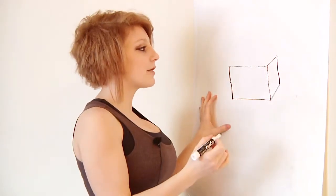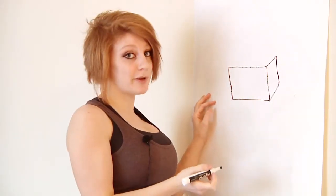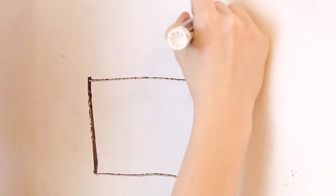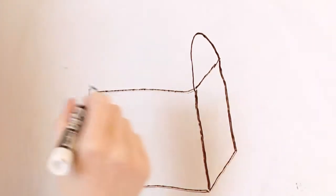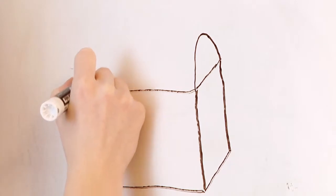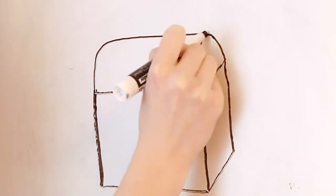Now for the top part of the pirate chest, it's curved, which is a little bit harder. You're going to draw a half circle or half oval over here. And you're going to draw this shape over there.